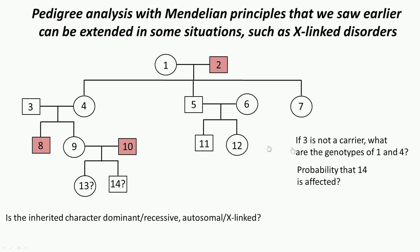The second question was: if person 3 is not a carrier — given, probably from genotypic analysis — what are the genotypes of 1 and 4? The last question was: what is the probability that 14 is affected?